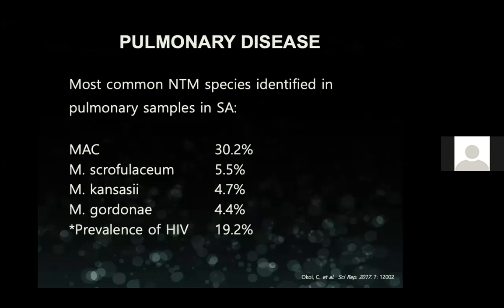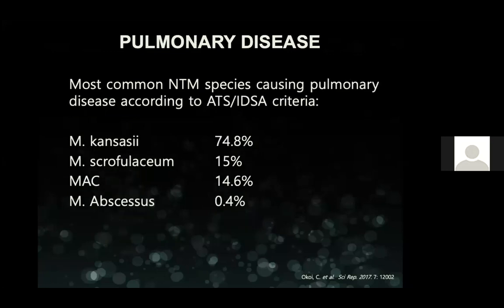In this population, the prevalence of HIV was just under 20%. When they only took studies that used the IDSA criteria for infection, they were left with only three studies, and that made kansasii a lot more prevalent at 74%, followed again by scrofulaceum, MAC, and then abscessus was quite a small percentage.